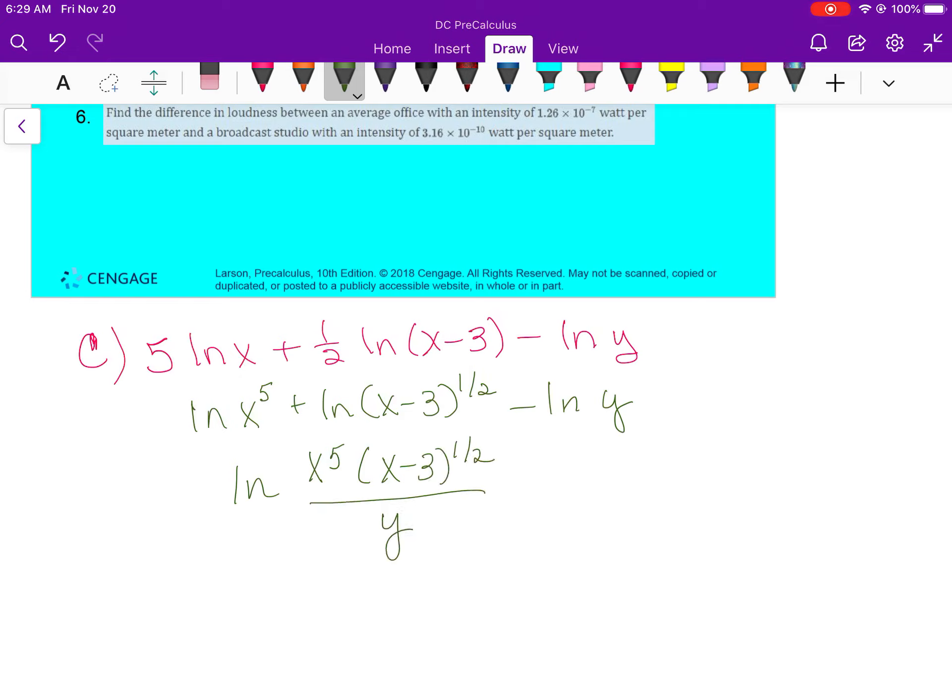Okay, so remember you only get to write the natural log one time, and that's pretty important to remember. You don't put a log on the top and a log on the bottom. This addition goes back to multiplication, and then I'm subtracting the y. Your last thing would be to make that a square root over the x minus three.